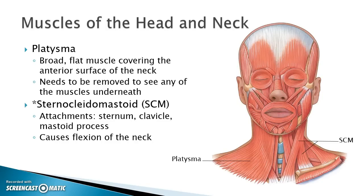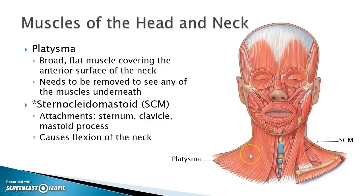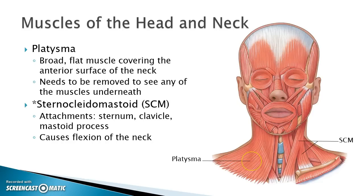Coming back to the body surface, we have the platysma — a very broad, flat muscle that covers the entire anterior surface of the neck. To see the muscles underneath it, you would have to remove the platysma, so in most pictures, models, and charts, you will see this muscle removed.